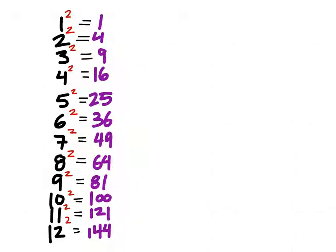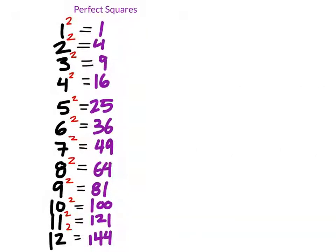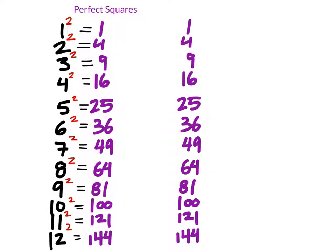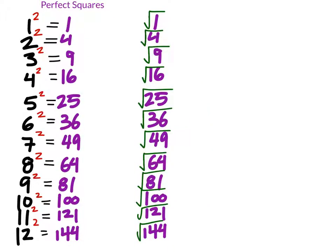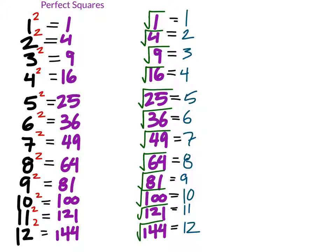These numbers here in purple are what we call perfect squares. If the numbers in black were the side lengths of a square, these purple values would represent the areas. The nice thing about perfect squares is if you were to square root each one of them, you would get whole values — no decimals, no fractions. So it's important to memorize these as much as we can, because we're going to see these numbers show up quite a bit, not only in this class but in the next class as well.